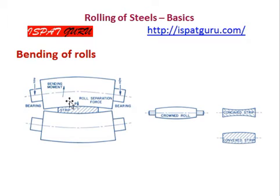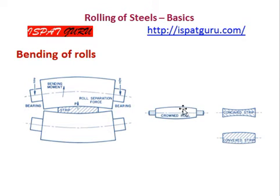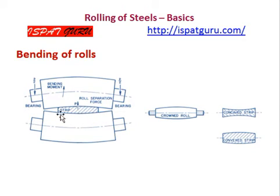One can see the bending of the rolls. The width of the strip is thicker at the center than at the edges. These are the crown rolls, and these are the tongue-shape rolls and tongue-shape strip. This is the tongue wedge strip being rolled, and if the roll is cambered, then the strip can be flattened.